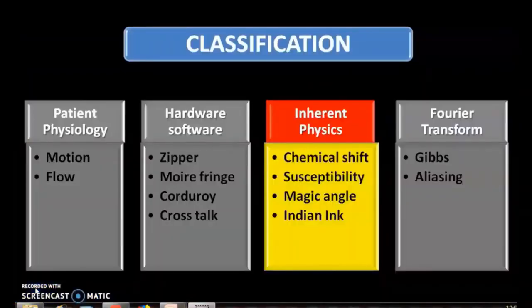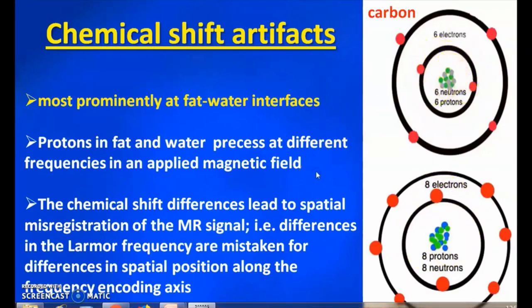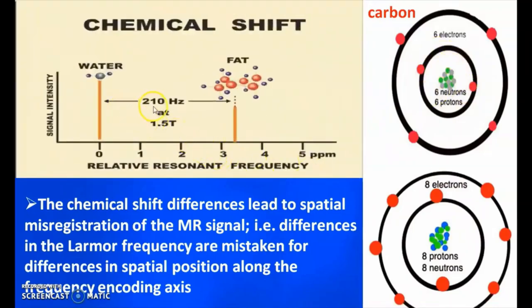The third classification is image formation and physics, which includes chemical shift artifacts, susceptibility artifacts, magic angle, and aliasing artifacts. There are two types of chemical shift artifacts. The first kind is most prominent at fat-water interfaces, because protons in fat and water precess at different frequencies in the applied magnetic field. In fat, the proton is attached to carbon which has six electrons, while in water it is attached to oxygen-hydrogen with eight electrons — this difference in electron environment causes a different chemical shift of 220 Hz per Tesla at 1.5T.